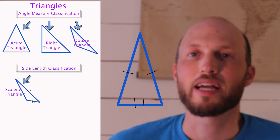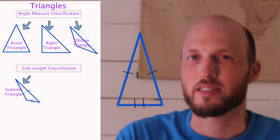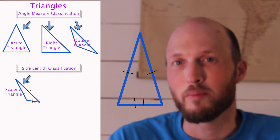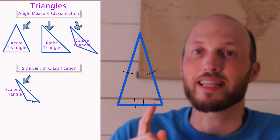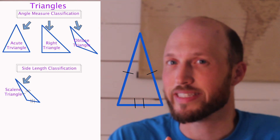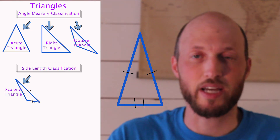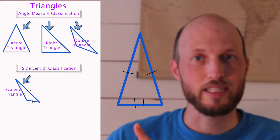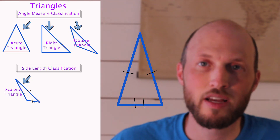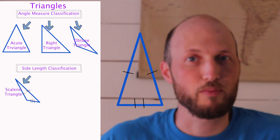Next we have the isosceles triangle. The biggest misconception is that the definition of isosceles is at least two sides the same — not exactly two sides the same, but at least two sides the same. So this isosceles triangle has two sides the same, as you can see by the dashes. But let's look at another case and put that in our diagram.